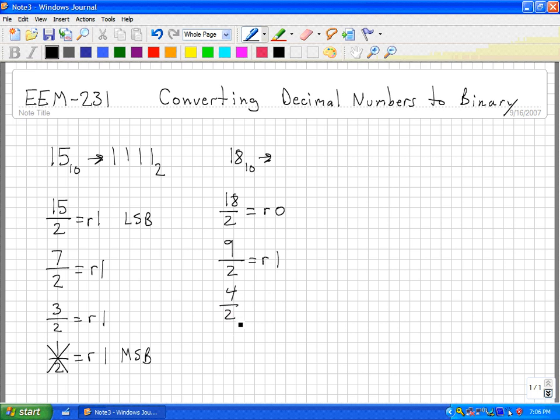4 divided by 2 equals 2. 2 times 2 is 4, so there is no remainder. 2 divided by 2 is 1. 1 times 2 is 2, so there is no remainder. And then 1 divided by 2, we can't do that, so we have a remainder of 1. Remember, this is my least significant bit. This would be my most significant bit.